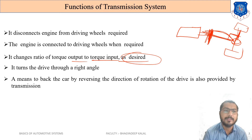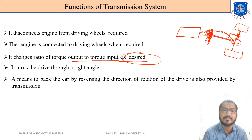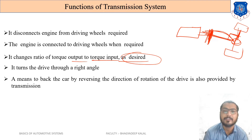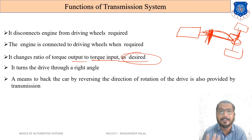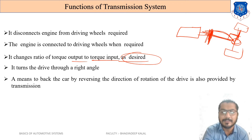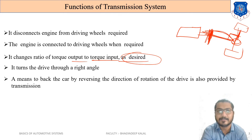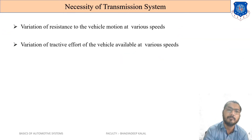A means to reverse the car is also provided by the transmission system. By reversing the direction of rotation of the drive, the vehicle can be moved in the reverse direction. We will understand how reverse is achieved in the next slide.